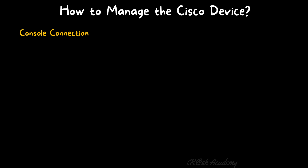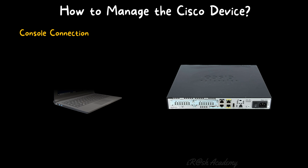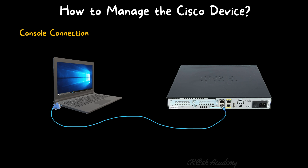To manage a Cisco device or any other network device, first of all we need to get a console connection. A console connection means having a physical local connection to the console of the device — physically connecting a cable between the device and a PC or laptop. This cable is called a console cable, and it plugs into the console port of the switch. When we connect this console cable to the console port and the other side into a laptop, we get the console connection — local access to the switch console.